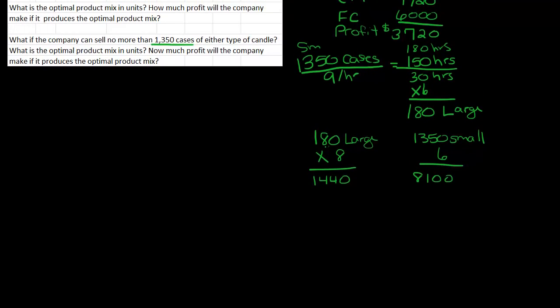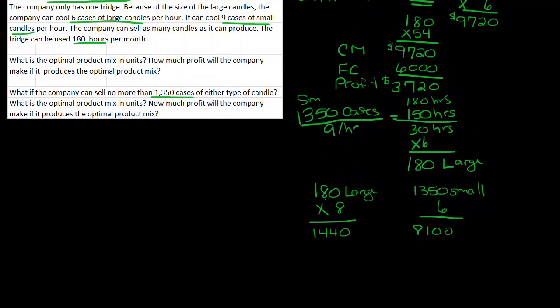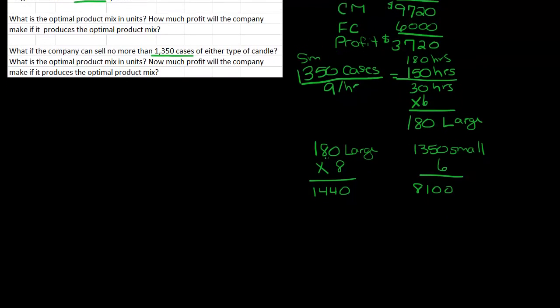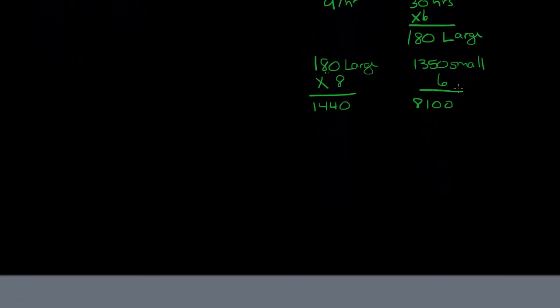And notice that my contribution margin for small, because we're only making 1,350, is lower than the contribution margin that we had before, because we're limited to how many units we can make. So if we add together our contribution margin, my total contribution margin is 9,540, minus my fixed cost of 6,000.